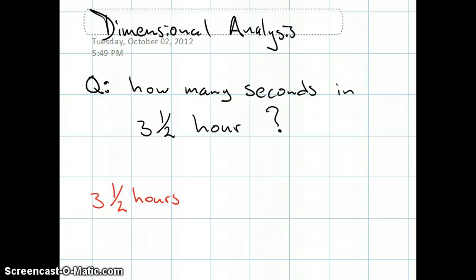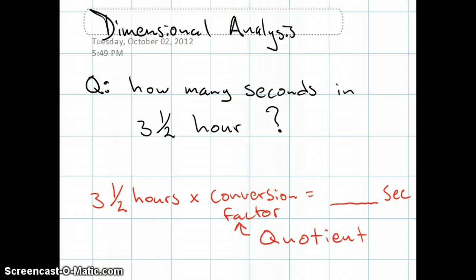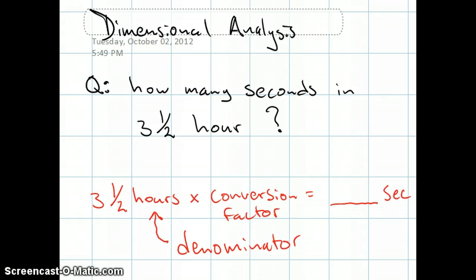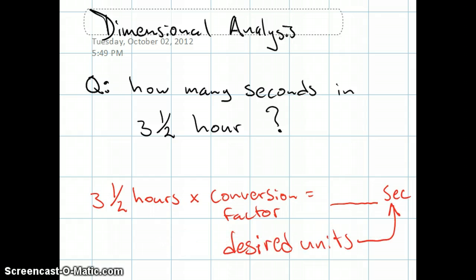We begin our calculation by writing down the given: 3.5 hours. If we multiply 3.5 hours by the proper conversion factor, we will get an answer in seconds. A conversion factor is a quotient that has equivalent quantities in the numerator and denominator expressed in different units. Since hours are our given quantity, hours will go in the denominator of our conversion factor. Since seconds are our desired unit, they will go in the numerator of our conversion factor.